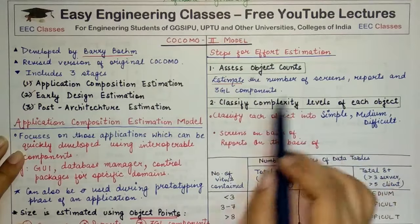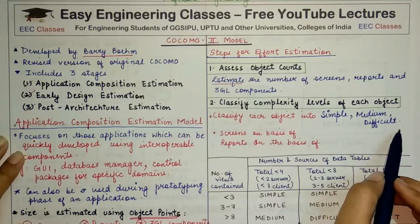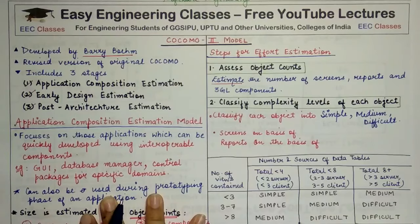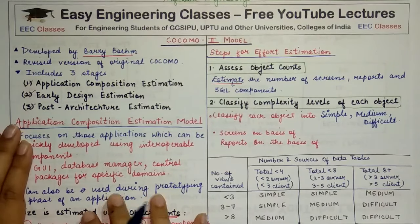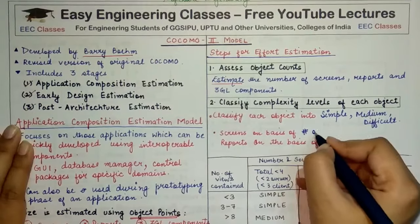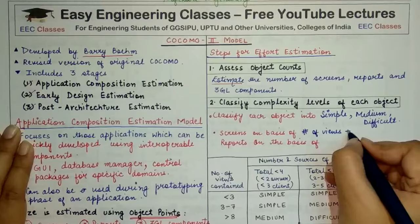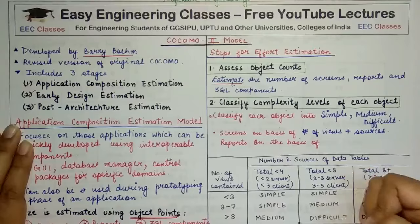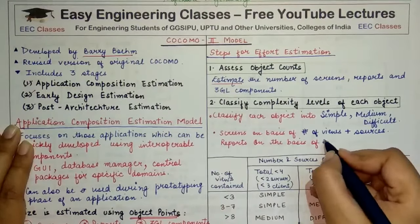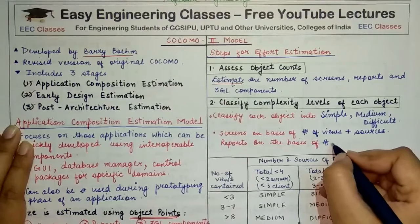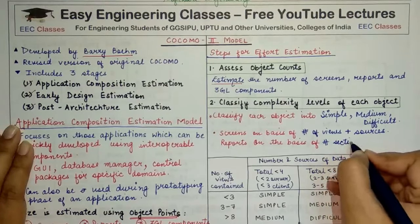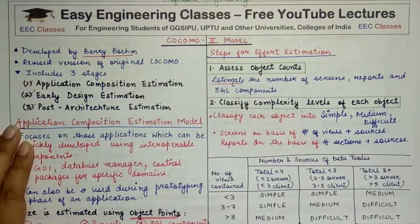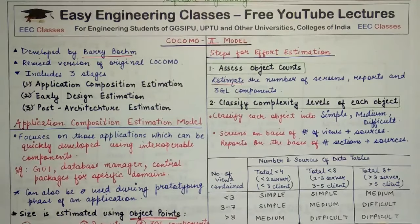So first we will classify every object as either simple, medium, or difficult. For screens, we use two values for classification: the number of views on the screen plus the sources. For reports, we classify on the basis of number of sections plus the number of sources. Let's look at what sources, views, and sections actually are — the tables will make this clearer.